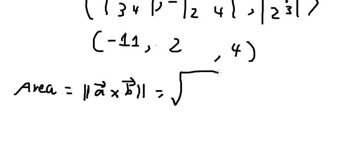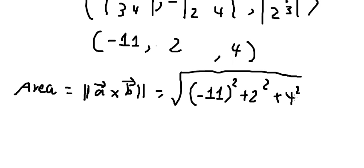We put the square root: negative 11 to the power of two, number two to the power of two, number four to the power of two. So we calculate this one and we have the square root of 141. So we have 11.874, and this is the final answer.